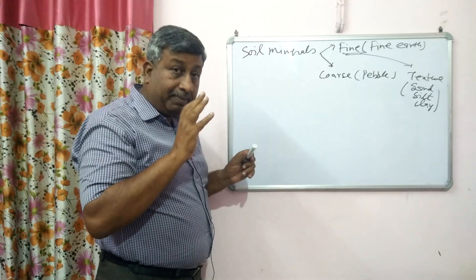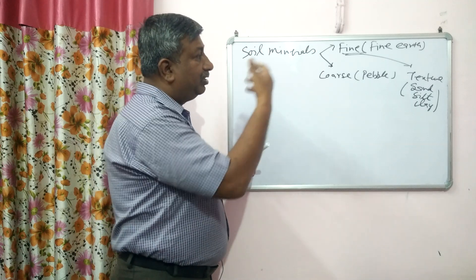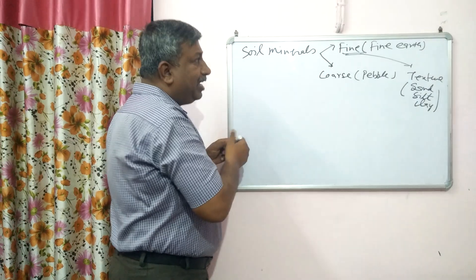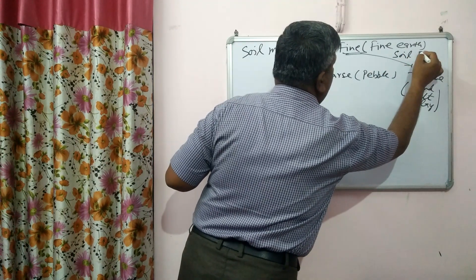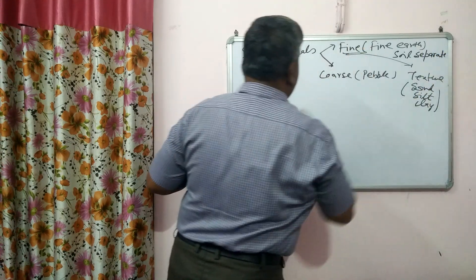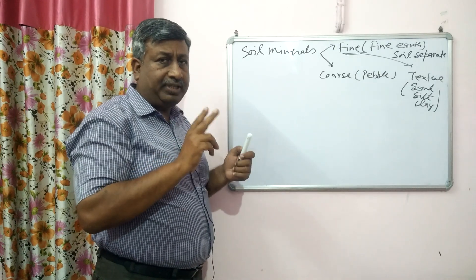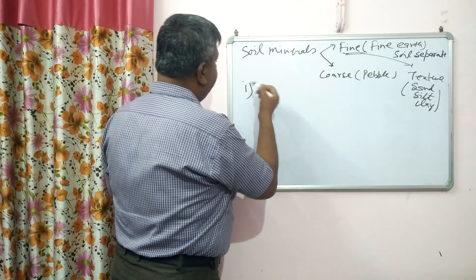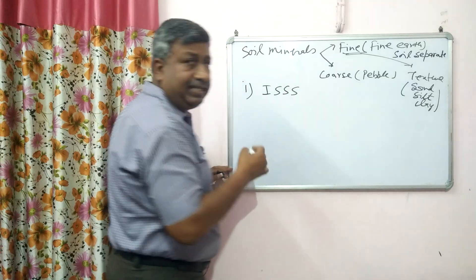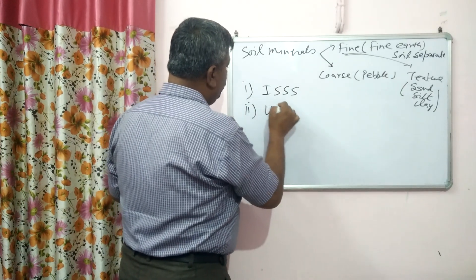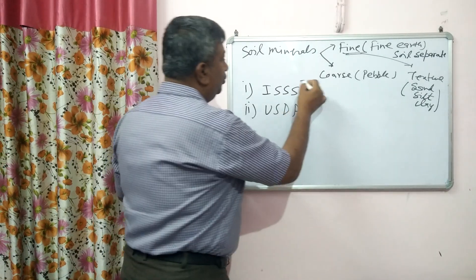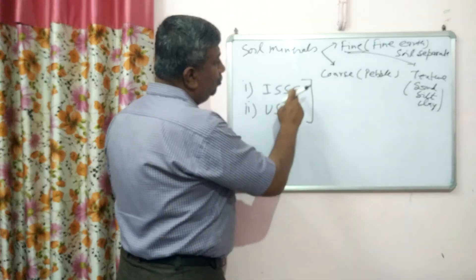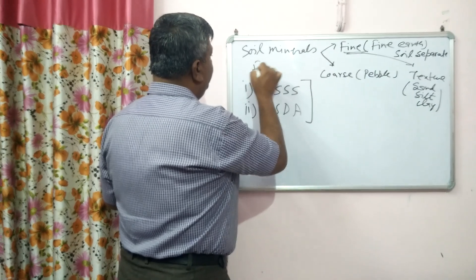The coarse particles are not included in soil texture. This is the classification according to the International Society of Soil Science. The second is USDA classification — United States Department of Agriculture. So there are two major classification systems. There is also a third, British classification. But in general, these two systems are used for the classification of fine earth.